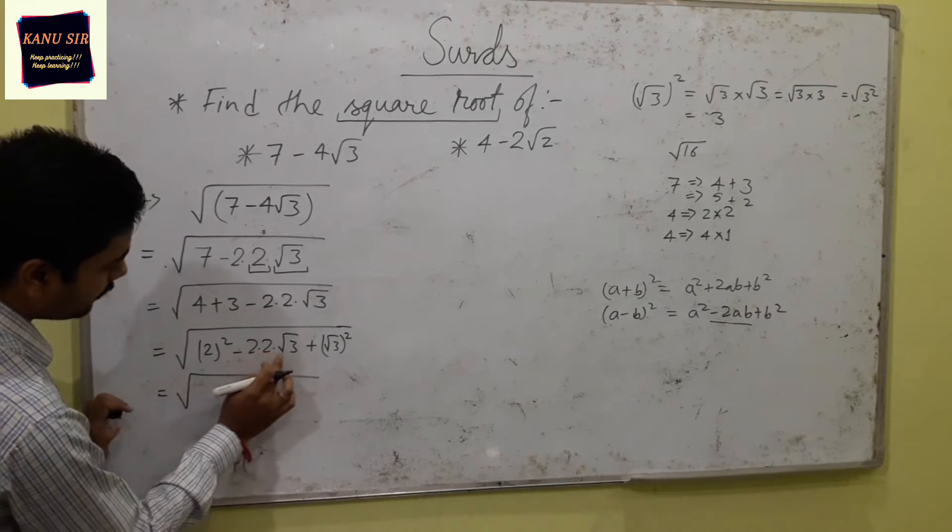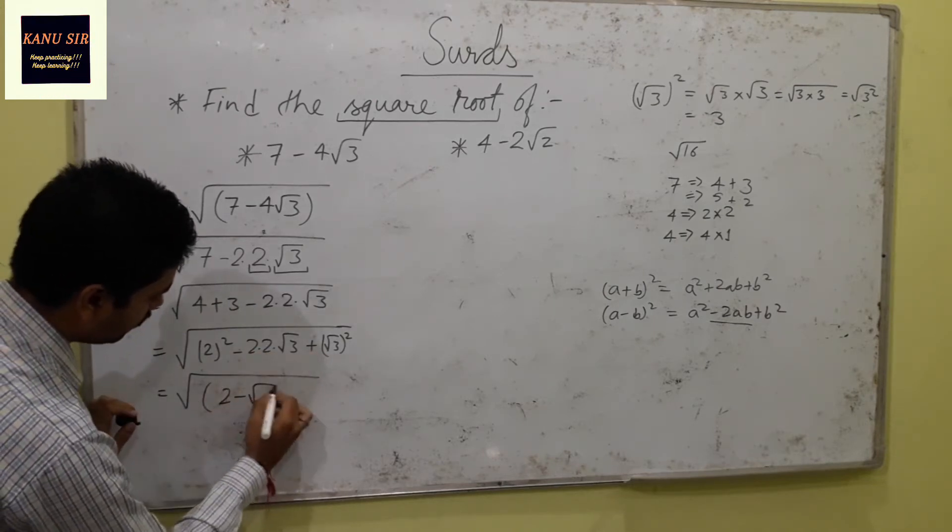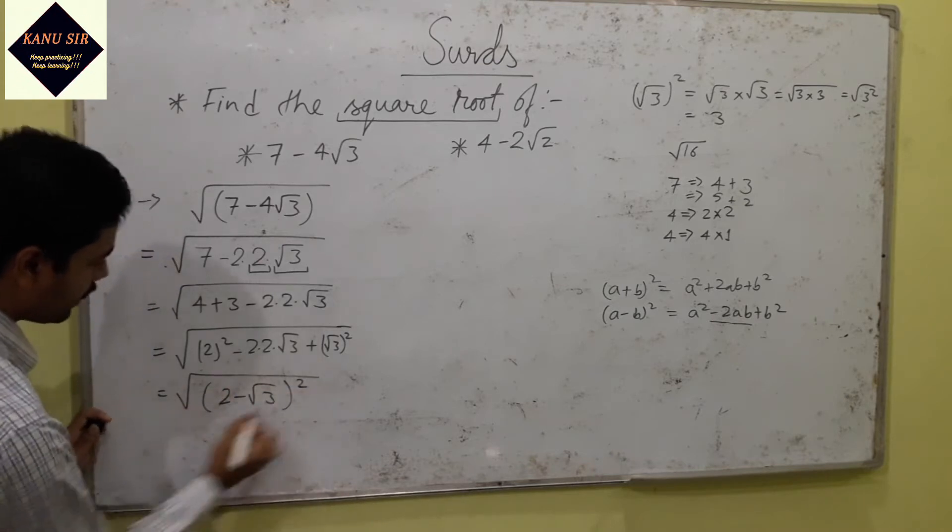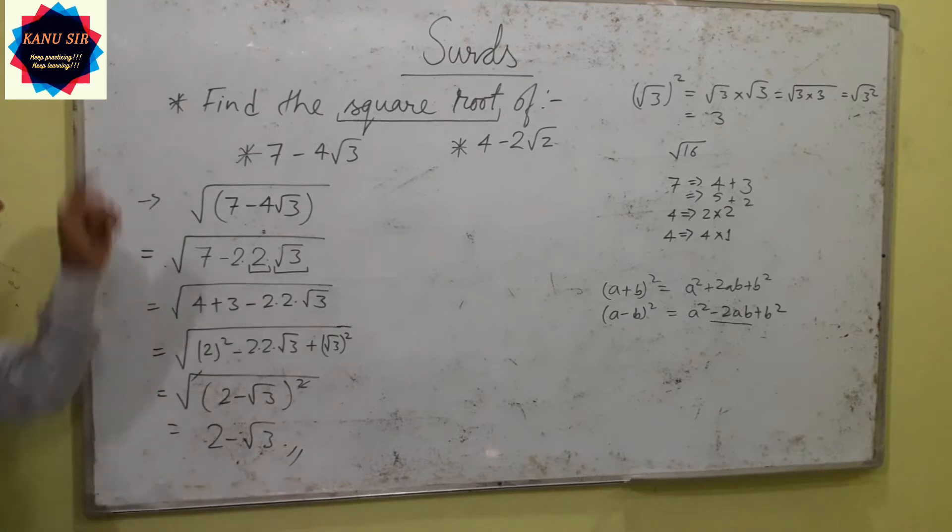So we get 2 minus root 3 whole square. The square root will be cancelled and you will get 2 minus root 3. Square root of 7 minus 4 root 3 is 2 minus root 3.